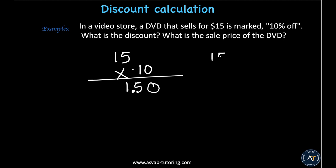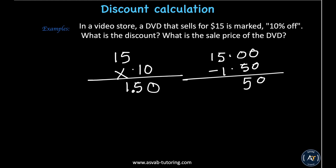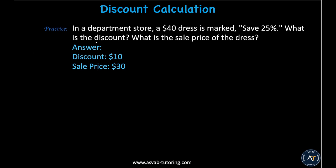To find the sale price, subtract the discount from the original: $15.00 minus $1.50 gives $13.50. Practice problem: a $40 dress is marked 20 percent off. What is the discount and what is the sale price? The discount is $10 and the sale price is $30.